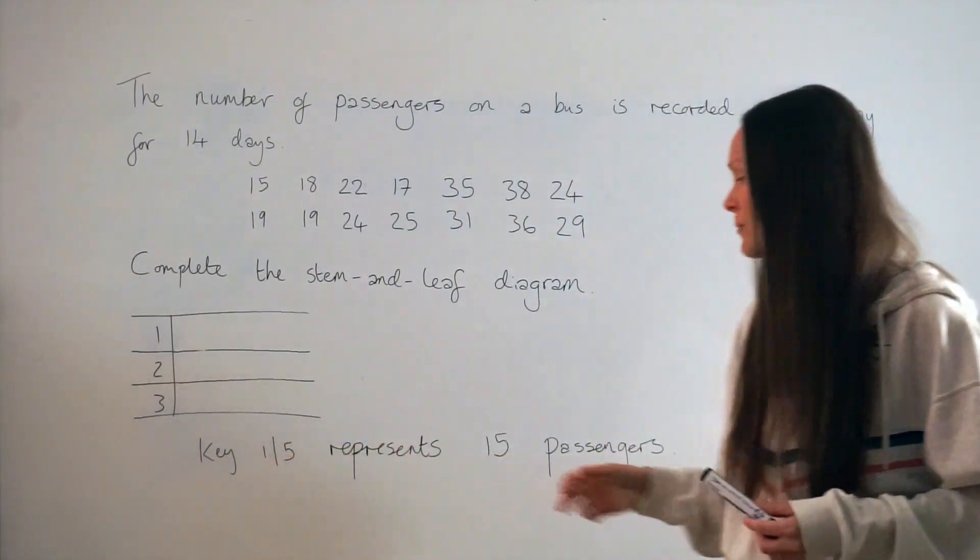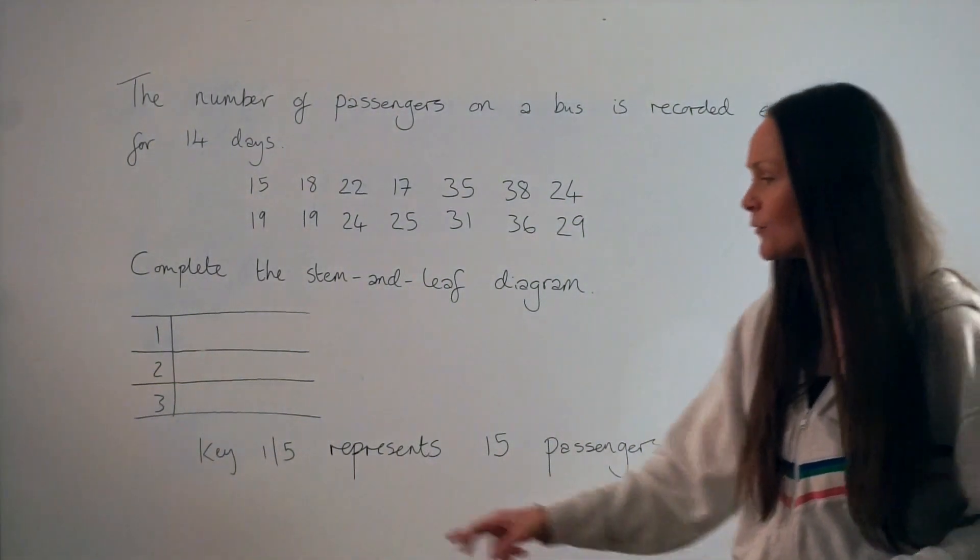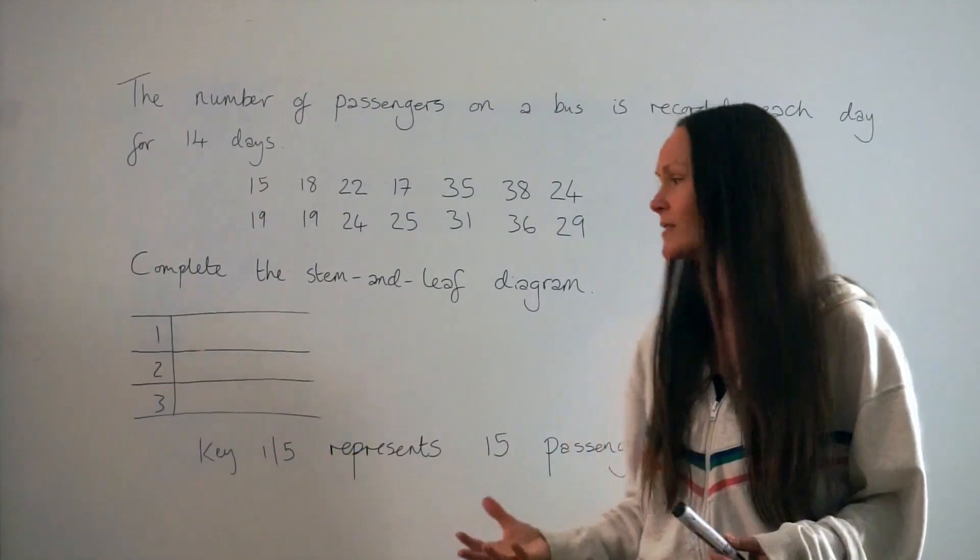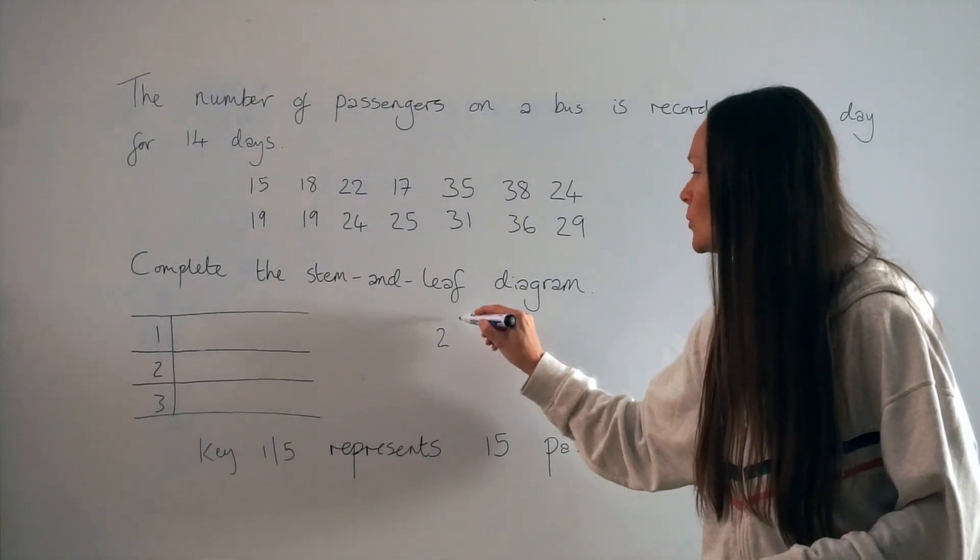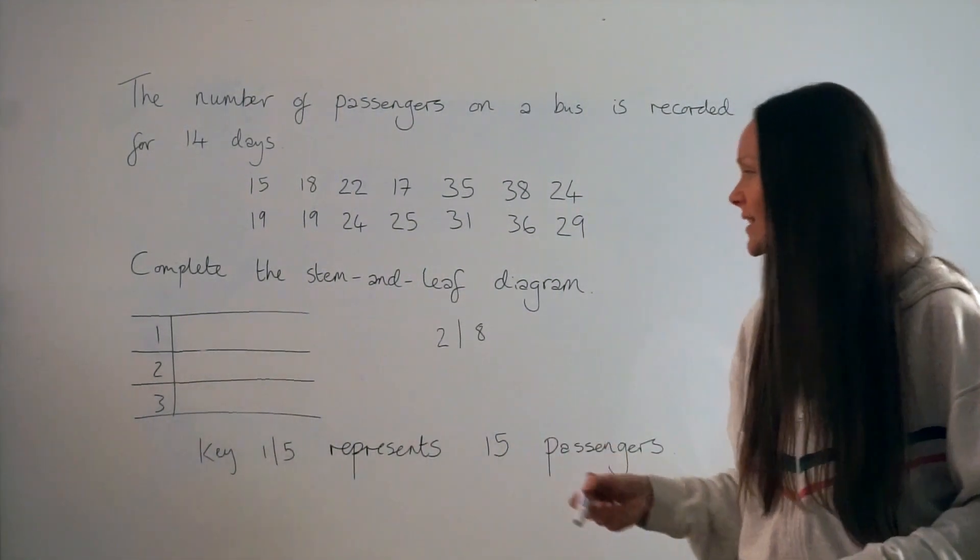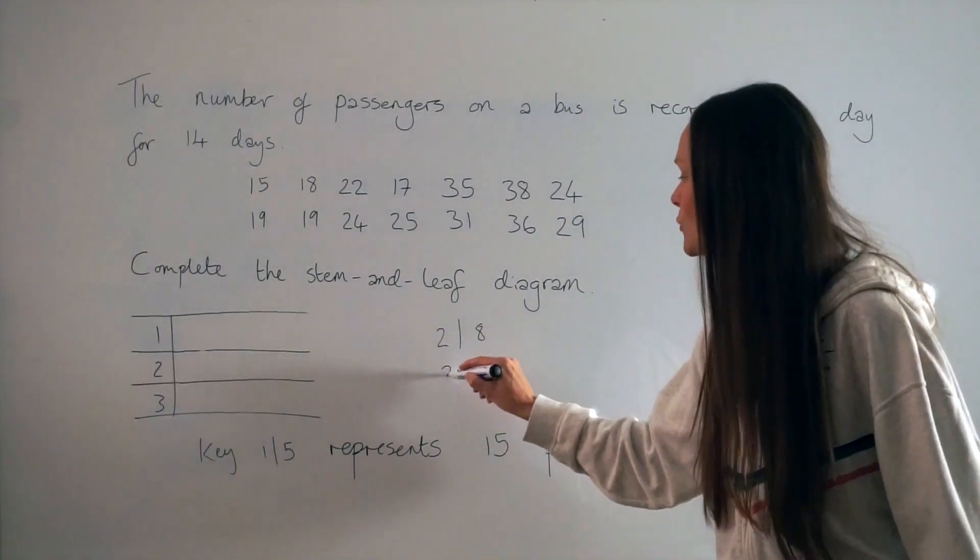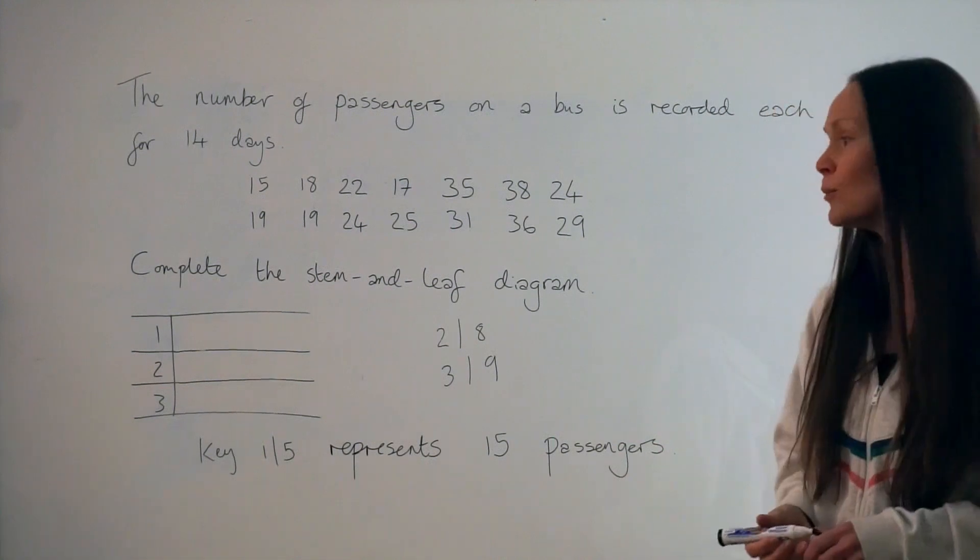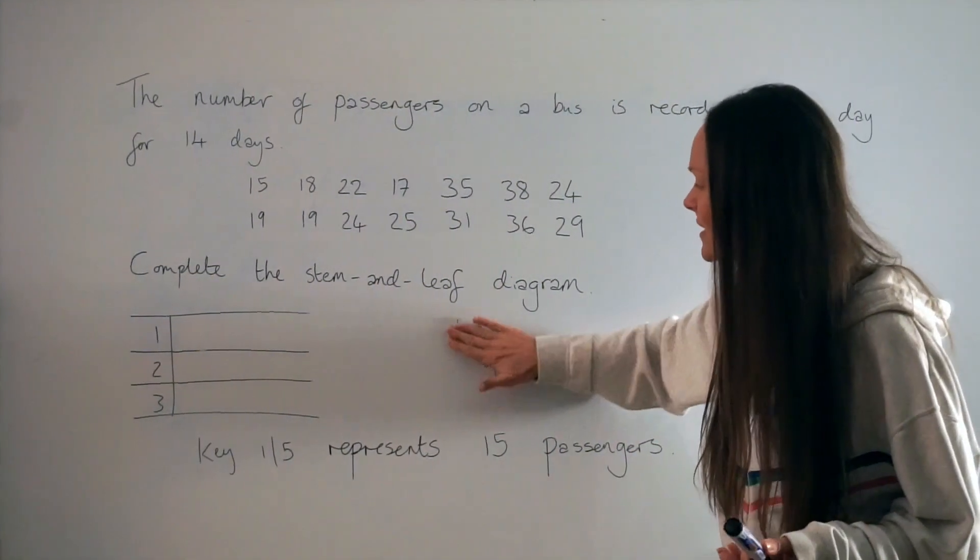At the bottom it says key. 1-5 represents 15 passengers. So this key just means if you see a 1 followed by a line and 5, it represents the number 15. If you were to see 2 with a line and then an 8, it would mean 28 passengers, for example. And if you saw 3 followed by a line and then the number 9, it would mean 39 passengers. So that's what the key means in this question.